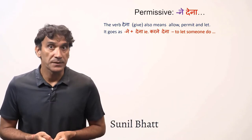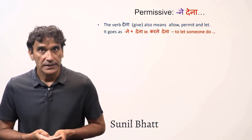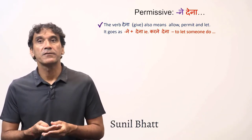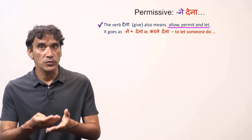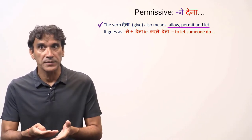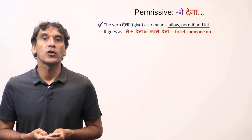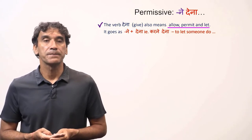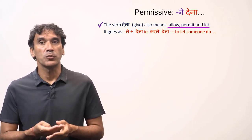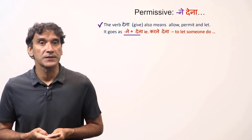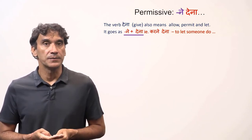The next grammar point is the permissive verb 'dena'. The basic meaning of the verb 'dena' is 'to give', but it also means to allow, to permit, or to let. This function of 'dena' is called permissive. The permissive 'dena' goes with another verb in the oblique form of the infinitive — it takes the 'ne' ending of the other verb.